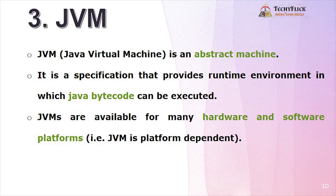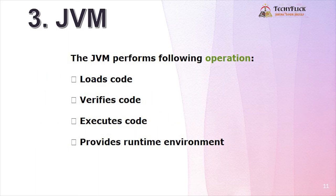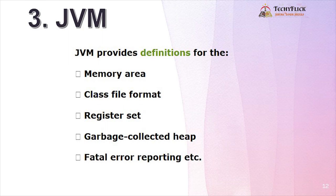JVM — Java Virtual Machine — is an abstract machine. It is a specification that provides a runtime environment in which Java bytecode can be executed. JVMs are available for many hardware and software platforms, making JVM platform independent. JVM performs the following operations: load, verify, execute, and provides the runtime environment. JVM provides definitions for memory area, class file format, register set, garbage collected heap, fatal error reporting, etc.